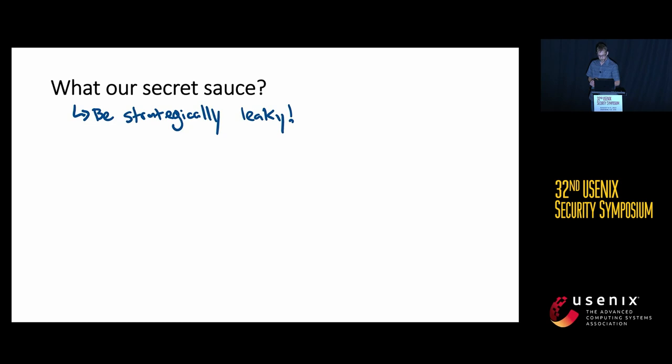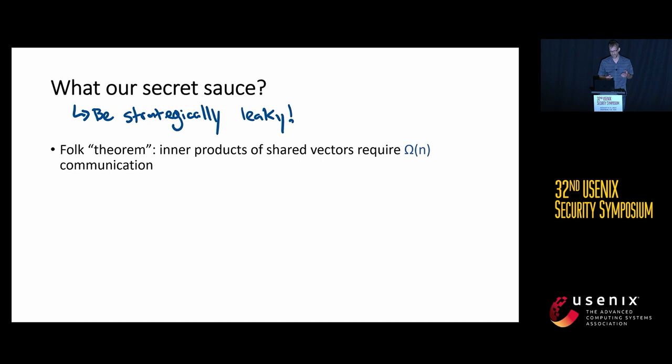So what is our secret? We are going to be strategically leaky. Rather than reconstructing the database, we will do an MPC-based inner product to fetch what we're looking for, but be very strategic about what we try to hide. Here's a folk theorem — not even really a theorem, but intuitively obvious to people in this area — which is that if you want to compute the inner product of two secret-shared vectors, you kind of need linear communication.